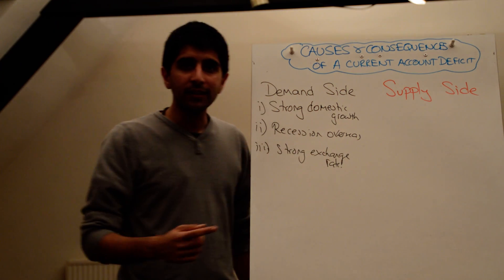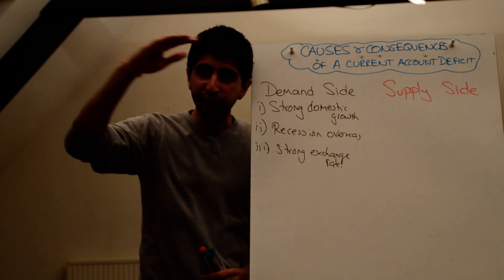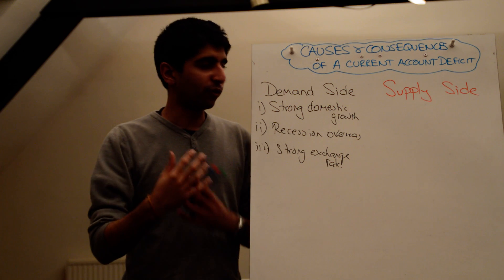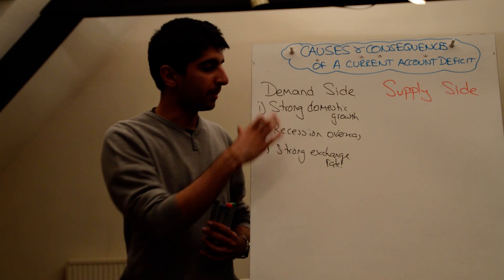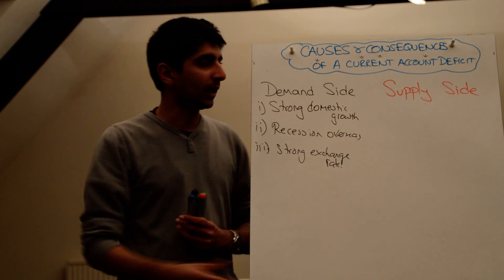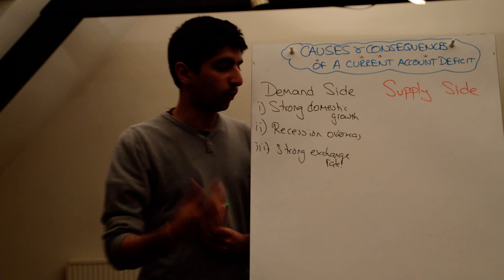If there is a recession overseas, it means incomes abroad are falling. So, the demand for our exports is going to reduce. If the demand for our exports fall, well, that means the money generated, the revenue generated from exports is going to decrease. Again, worsening our current account, maybe causing a deficit.